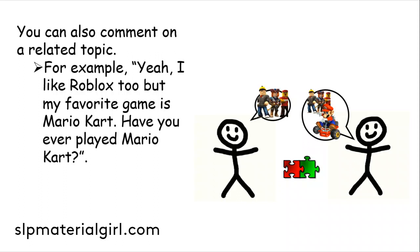You can also talk about a related topic. For example, 'Yeah, I like Roblox too, but my favorite game is Mario Kart — have you ever played Mario Kart?' These are connected because they're both Nintendo Switch games. Your friend was talking about Roblox, you acknowledge their comment and connect by saying you like Roblox too, or that you prefer Mario Kart. Then you ask them how they feel about it. These are related topics — these are connected comments.